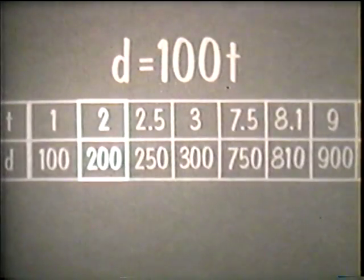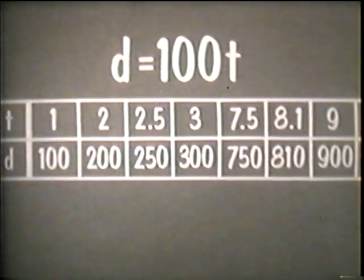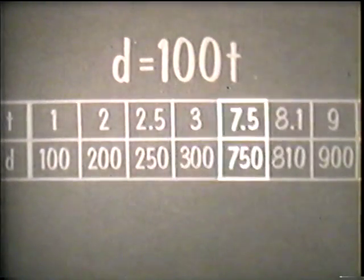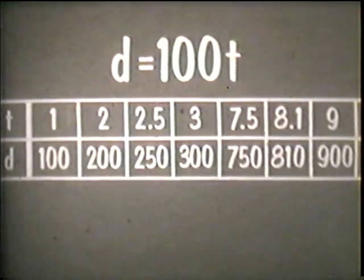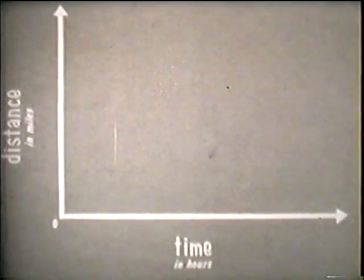Each pair satisfies the relationship between the two variables. Yet only a few of these pairs can be shown in a table. To show a more complete picture of the relationship, we construct a mathematical line graph. These two perpendicular lines will represent the variables of time and distance. The point where they meet is marked zero to show the origin of the lines, and arrowheads are marked to show that the lines can be thought of as extending an endless distance away from their origin.